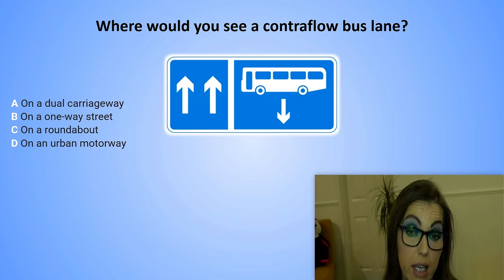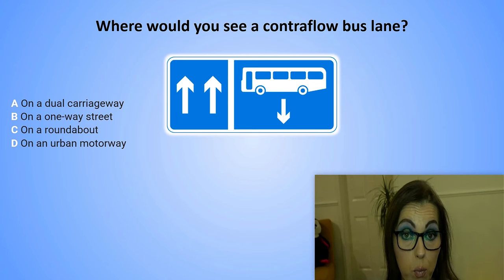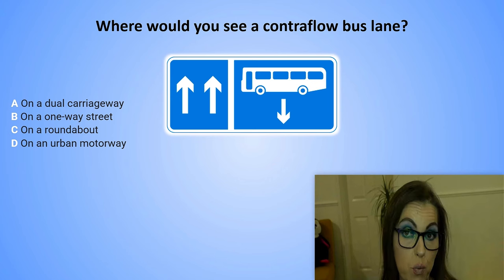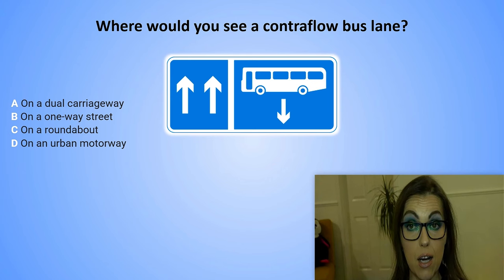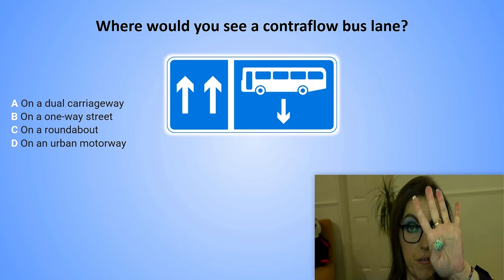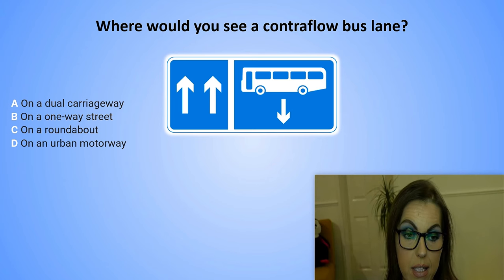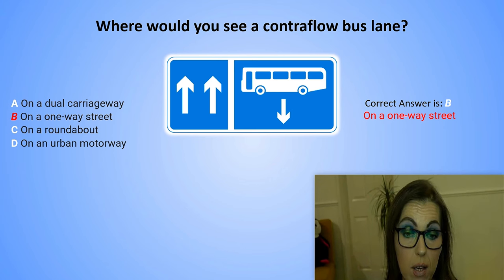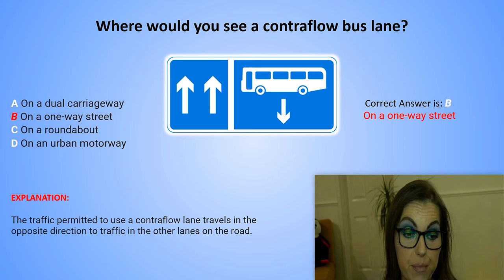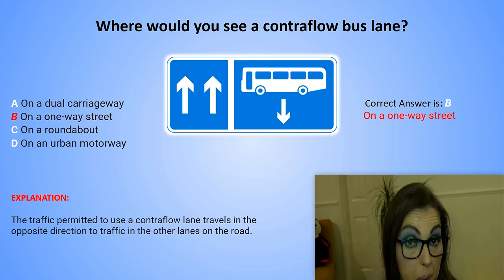Where would you see a contraflow bus lane? A. On a dual carriageway. B. On a one-way street. C. On a roundabout. Or D. On an urban motorway. The correct answer is B. On a one-way street. Explanation: The traffic permitted to use a contraflow lane travels in the opposite direction to traffic in the other lanes on the road.